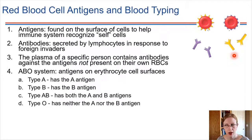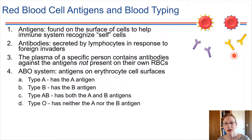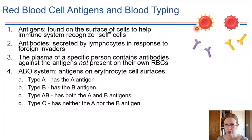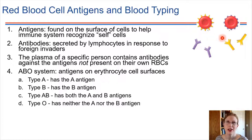With the different blood types that people have, it turns out there are four different types, just due to the different possible combinations of carbohydrates present on the surface of red blood cells. So four different types — let's check out what those four types are.